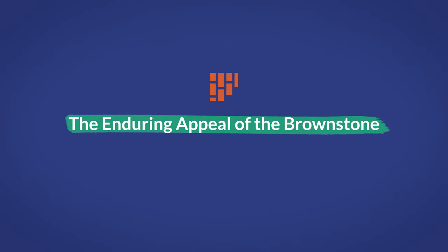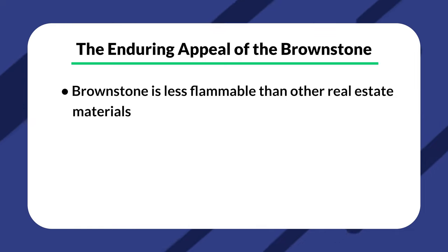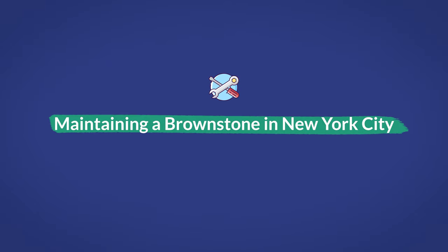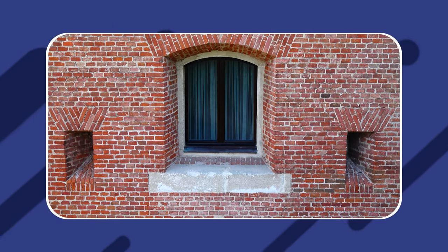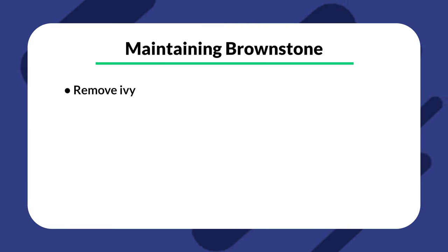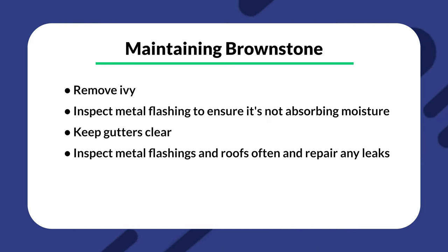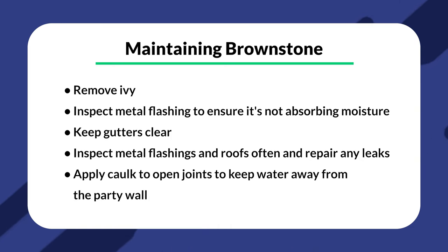The enduring appeal of the brownstone. When the Portland brownstone quarry shut down in 2012, it shocked the public that something so iconic would be coming to an end. Many people want to stay in brownstone townhouses mainly because brownstone is less flammable than other real estate materials. Since no one is building new brownstones and the remaining ones are over 100 years old, supply drives demand. The stone is especially susceptible to pollution and climate changes because of its porous layered composition. Regular maintenance can help with upkeep: remove ivy, inspect metal flashing to ensure it's not absorbing moisture, keep gutters clean, inspect roofs often and quickly repair any leaks, and apply caulk to open joints around door surrounds, horizontal structures, and windows.